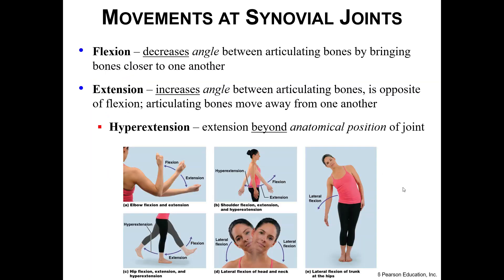Most of these movements come in pairs. You move something one way and then you can basically undo that — and that undoing motion is a completely different motion. We've got flexion and extension. Flexion will decrease the angle between the articulating bones, bringing them closer together. So when you make a muscle, you are flexing. When you increase the angle between the articulating bones, you are extending.